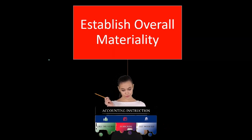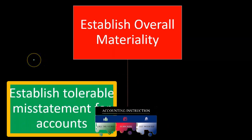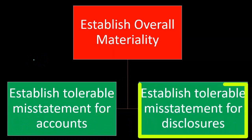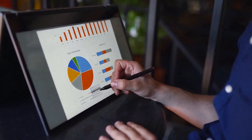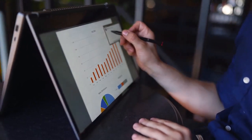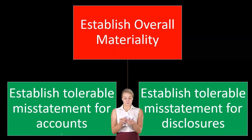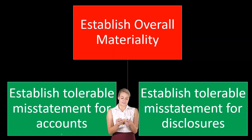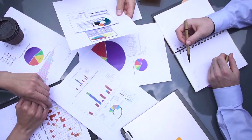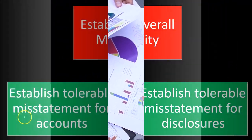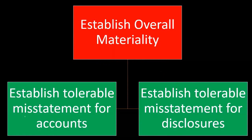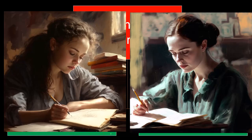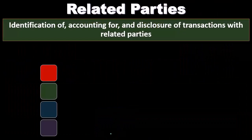To do this we establish overall materiality, tolerable misstatement of accounts, and tolerable misstatement of disclosures. When we think about what would be a tolerable and acceptable materiality threshold — a level below which the financial statements would not be considered materially misstated — we establish tolerable misstatements per account. As we audit those accounts, we have a tolerable misstatement to work with, and the same applies to disclosures.